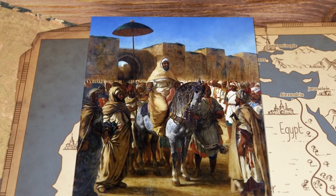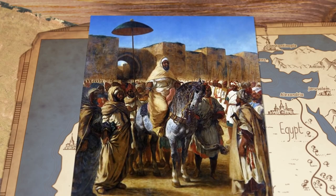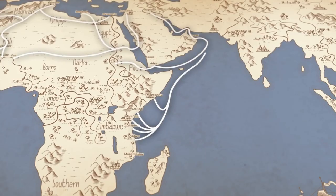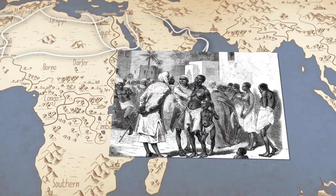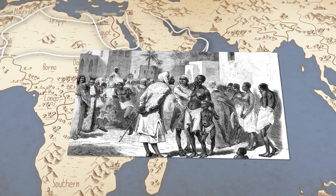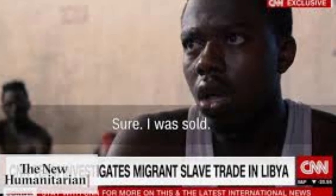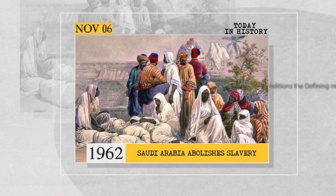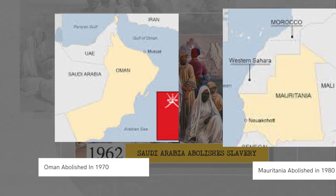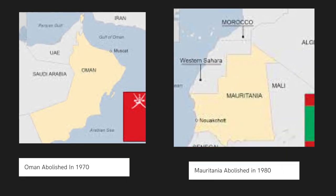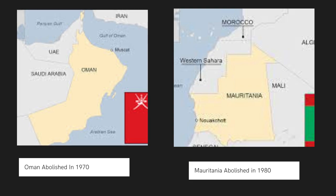By the 8th century AD, the Arabs had conquered North Africa, and then Islam started to spread southwards along the Nile, the desert trails through the Sahara, and along the Indian Ocean coast. Zanzibar, Cairo, and Baghdad were all bustling hubs for commercial human trafficking, and arguably a form of modern slave trade still happens today in the Gulf.